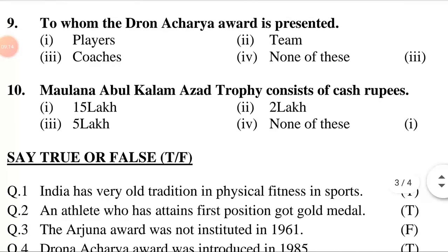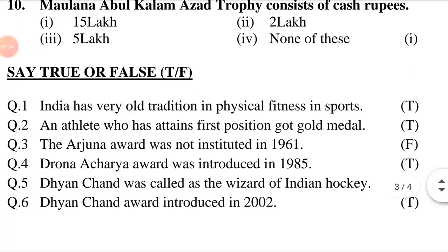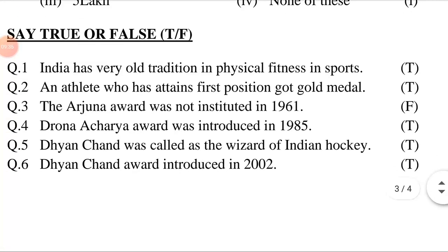The Maulana Abul Kalam Azad Trophy consists of cash rupees. First option: 15 lakh. Second option: 2 lakh. Third option: 5 lakh. Fourth option: none of these. The answer is 15 lakh.